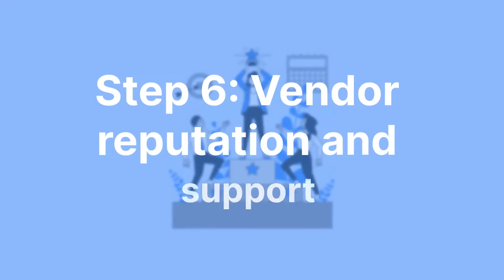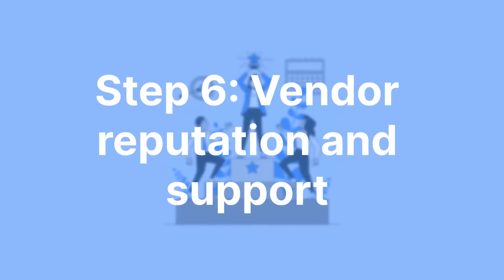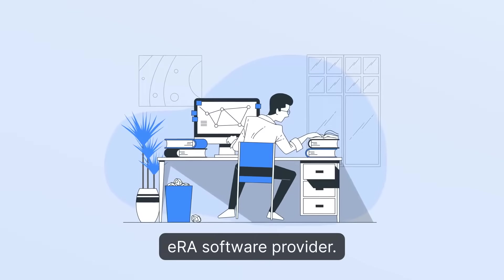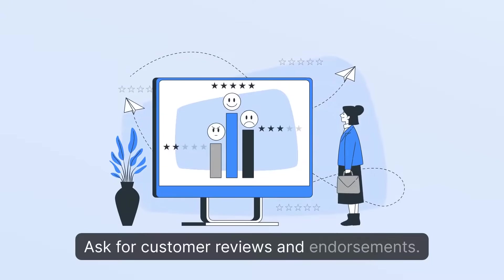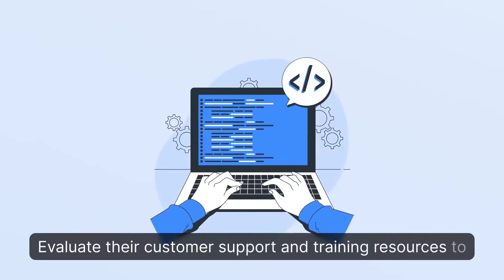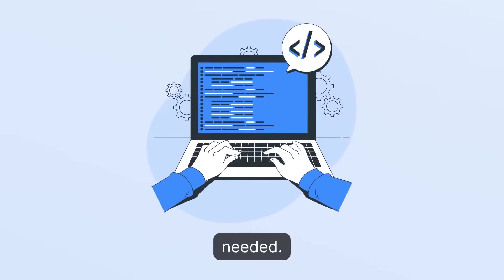Step 6. Vendor Reputation and Support. Research the reputation and track record of the ERA software provider. Ask for customer reviews and endorsements. Evaluate their customer support and training resources to ensure you will have the necessary assistance when needed.